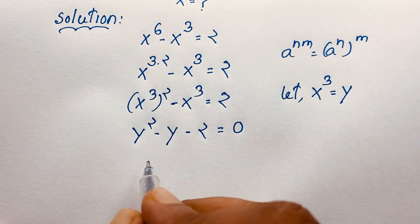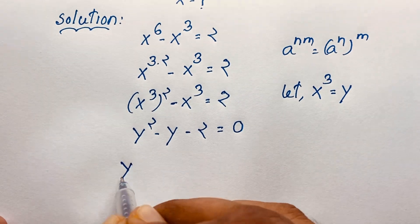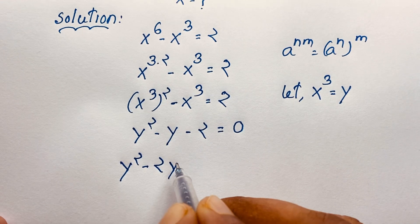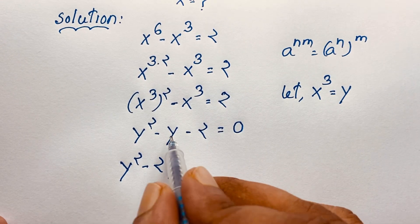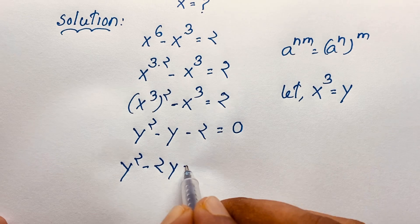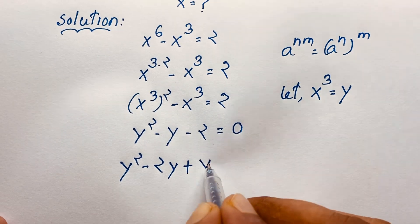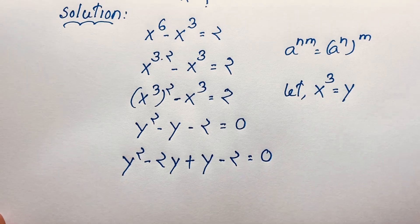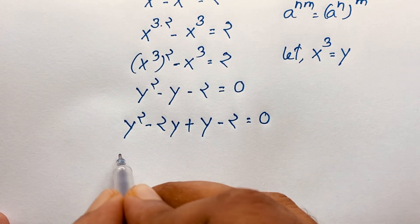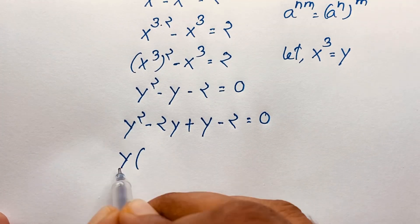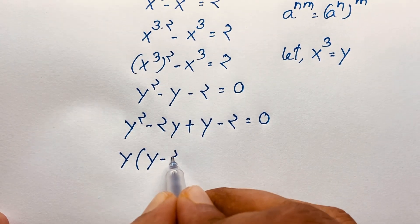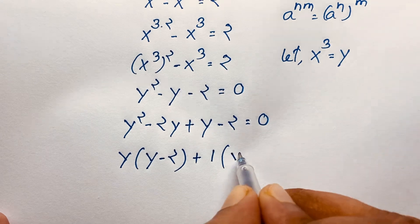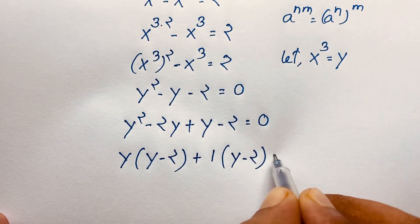Now, at this moment, I do middle-term factoring here. So it will be y squared minus 2y plus y minus 2 is equal to 0. Because 2 times 1 is 2, and 2 minus 1 gives us y. So minus minus will be plus. This is y, minus 2 is equal to 0. Then, you can see y is common — this divided by this is y, and this divided by this is minus 2.